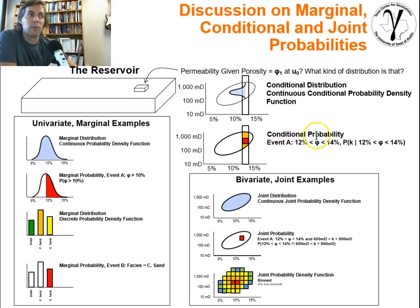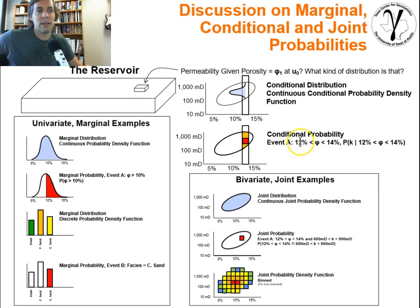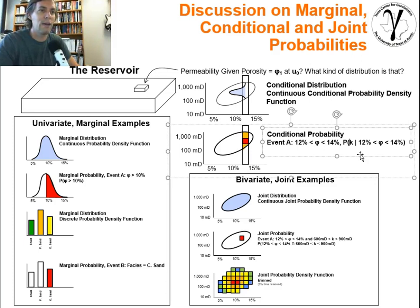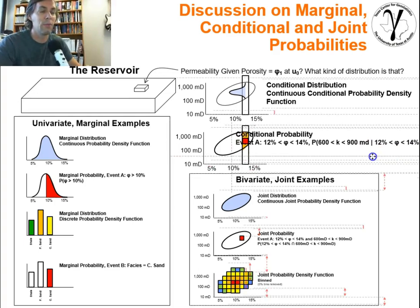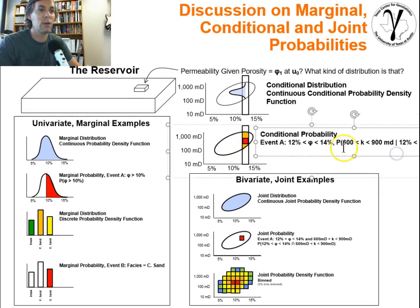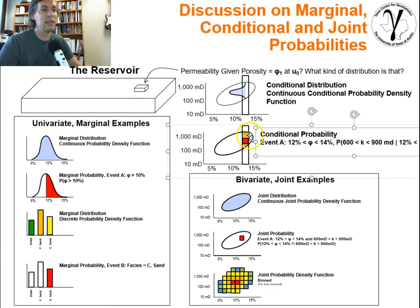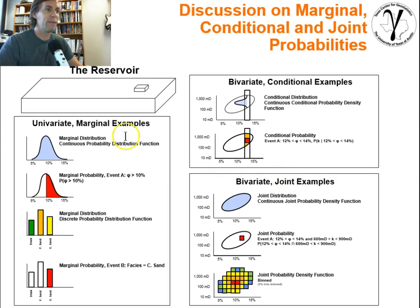We could also calculate a conditional probability. We already identified porosity as 12% to 14%, and then we ask: what's the probability of having a specific permeability value given that? We could specify a range — say permeability between 600 and 900 millidarcies — and calculate that conditional probability. It would be the probability of having that red square given that we shrank our universe down to the entire orange area containing that red square.